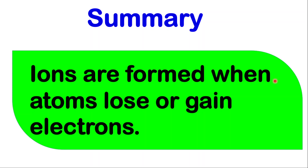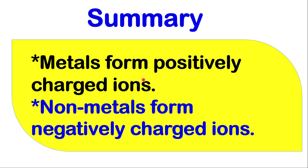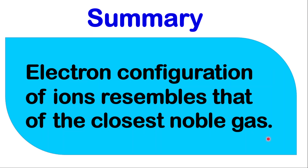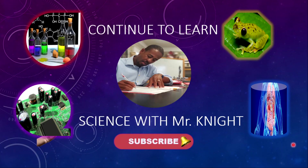In summary, to finish this lesson: ions are formed when atoms lose or gain electrons. Metals form positively charged ions by losing electrons. Non-metals form negatively charged ions by gaining electrons. The electronic configuration of ions resembles that of the closest noble gas. We're at the end of another learning series and I hope to see you in the next lesson. Stay safe until we meet again.